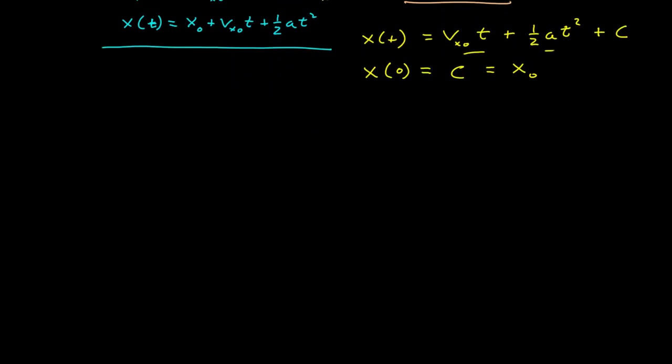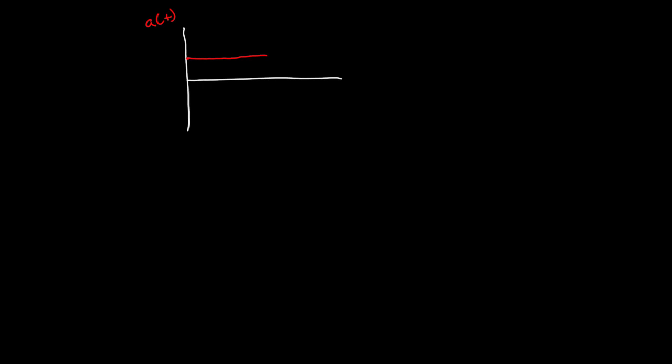If we look at a graphical representation — say I have some positive constant acceleration, like a car that's accelerating — this is a of t, with some constant positive value. To get my velocity I have to know the initial condition. So let's say I have an initial velocity equal to zero; then my velocity function as a function of time is equal to a·t, so it's some increasing straight line.